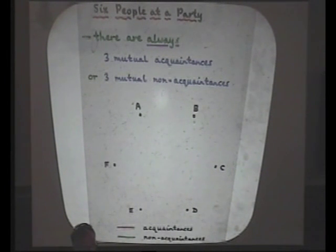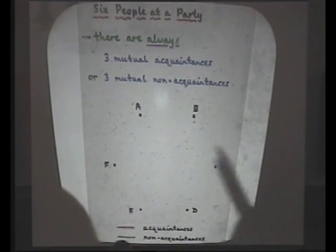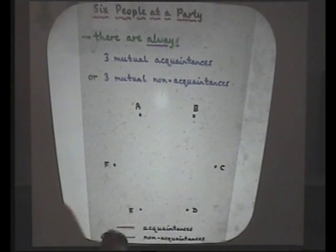How do you start? Well, let's look at any of them. Let's say A. Well, how many lines come out of A? One, two, three, four, five. Okay, five lines out of A.